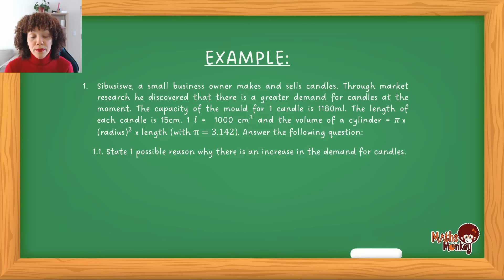Sibusiswe, a small business owner, makes and sells candles. Through market research, he discovered that there is a greater demand for candles at the moment. The capacity of the mold for one candle is 1180 milliliters. So that means the mold that we have, the space of liquid that can fit in that mold is 1180 milliliters.